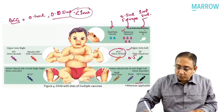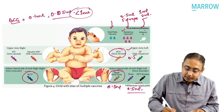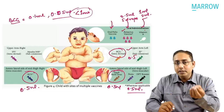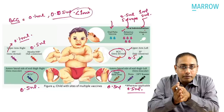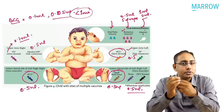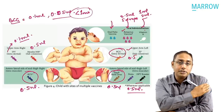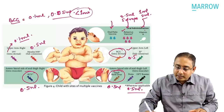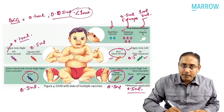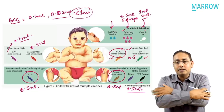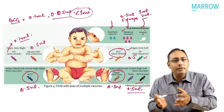DPT booster and pentavalent are both 0.5 ml. Hepatitis B birth dose is 0.5 ml. Pneumococcal conjugate vaccine is intramuscular at 0.5 ml. Measles-rubella vaccine is 0.5 ml. IPV is intradermal at 0.1 ml. To summarize: intradermal vaccines are 0.1 ml; intramuscular and subcutaneous vaccines are 0.5 ml. Vaccines given in the left upper arm are subcutaneous and BCG (intradermal). Right upper arm has measles (subcutaneous) and IPV (intradermal). Thigh vaccines are intramuscular.